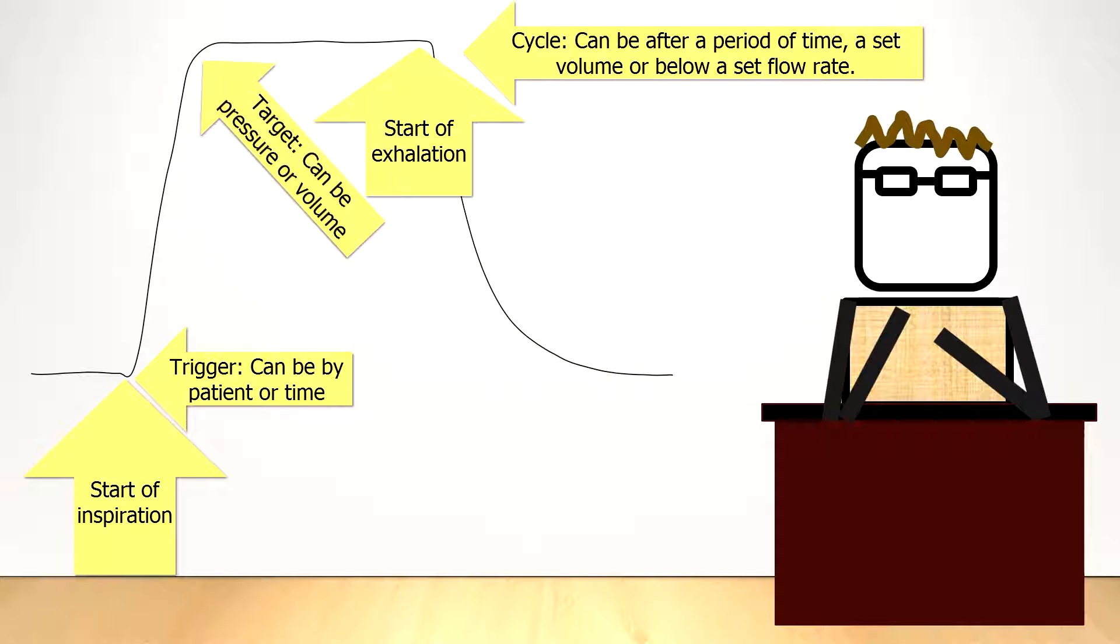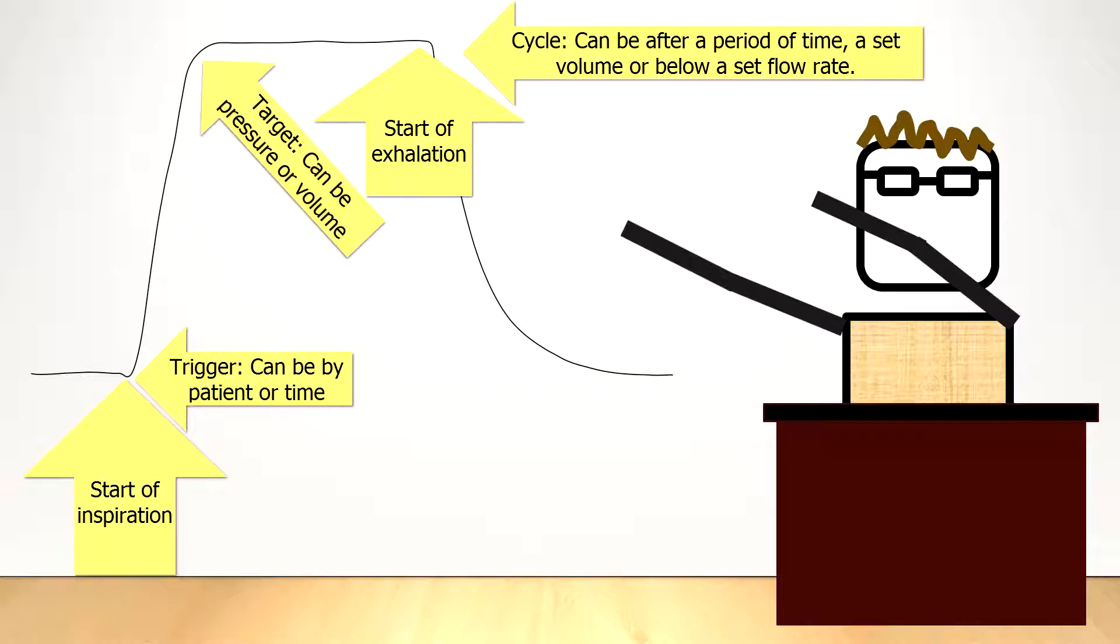Exhalation itself is passive and is not a controlled variable. One thing to watch when you're ventilating a patient is to observe the flow pattern on the exhalation limb to ensure that a complete exhalation has occurred prior to the initiation of the next breath. If there is still flow present during exhalation just as the next breath is delivered, then this means that gas trapping is occurring.